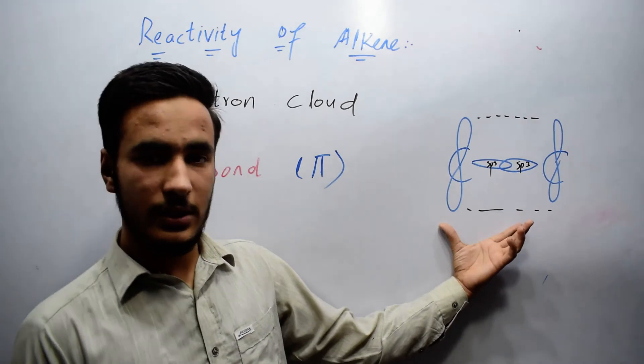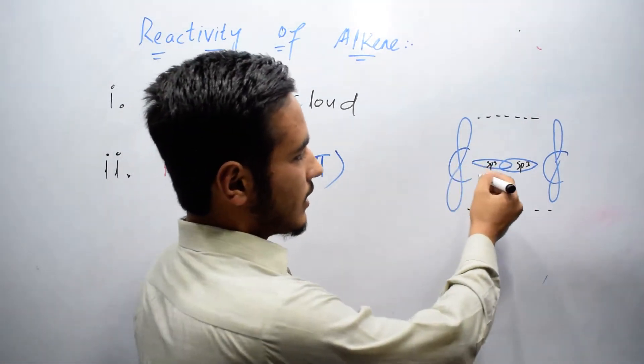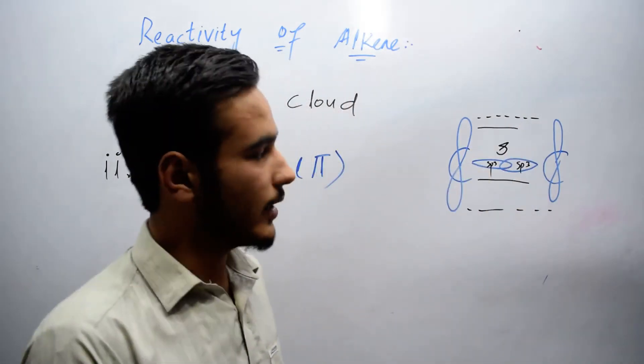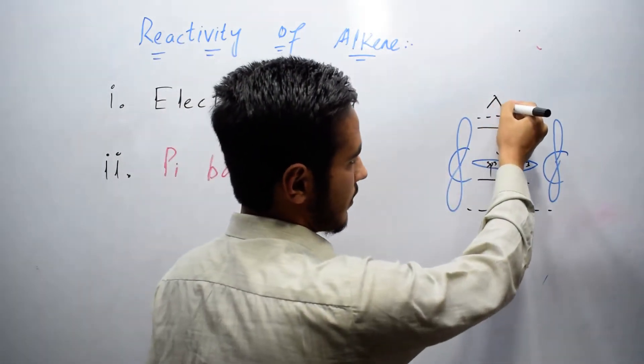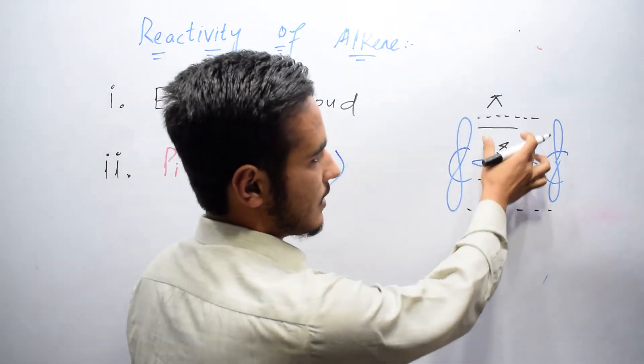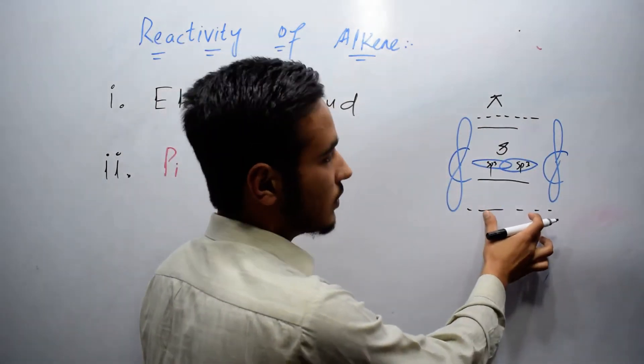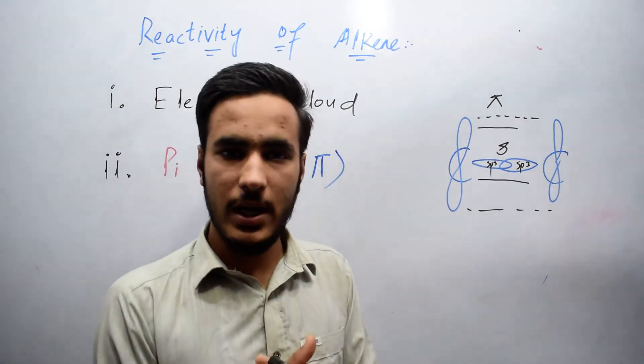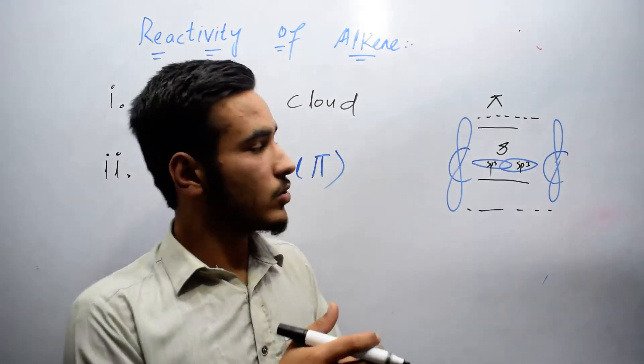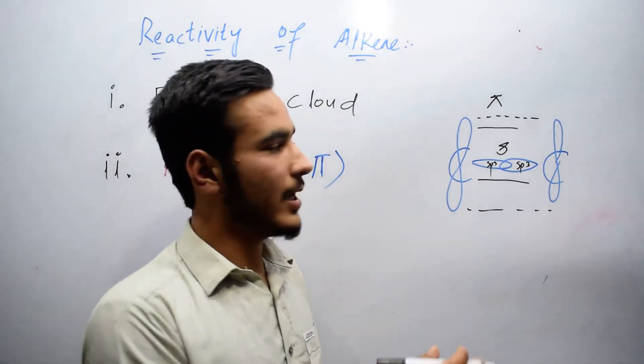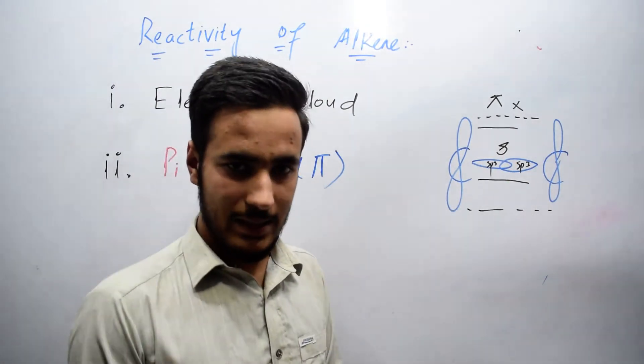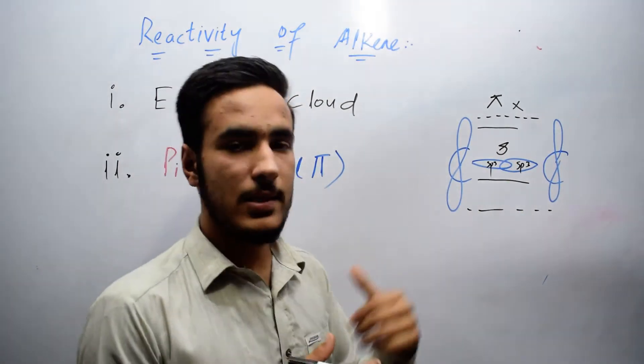Here is one bond and here is another. This is sigma bond and this is pi bond. Pi bond makes a cloud above and below the axis. There is no exact location of the electron. When electrophiles—those which love electrons—attack, they can easily attack and break this pi bond. That's why alkene is more reactive.